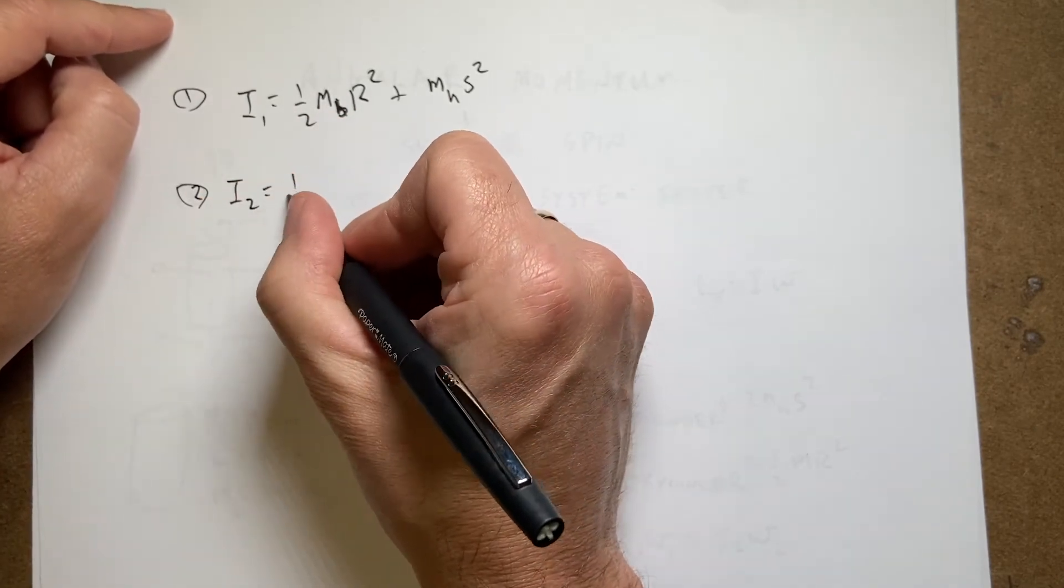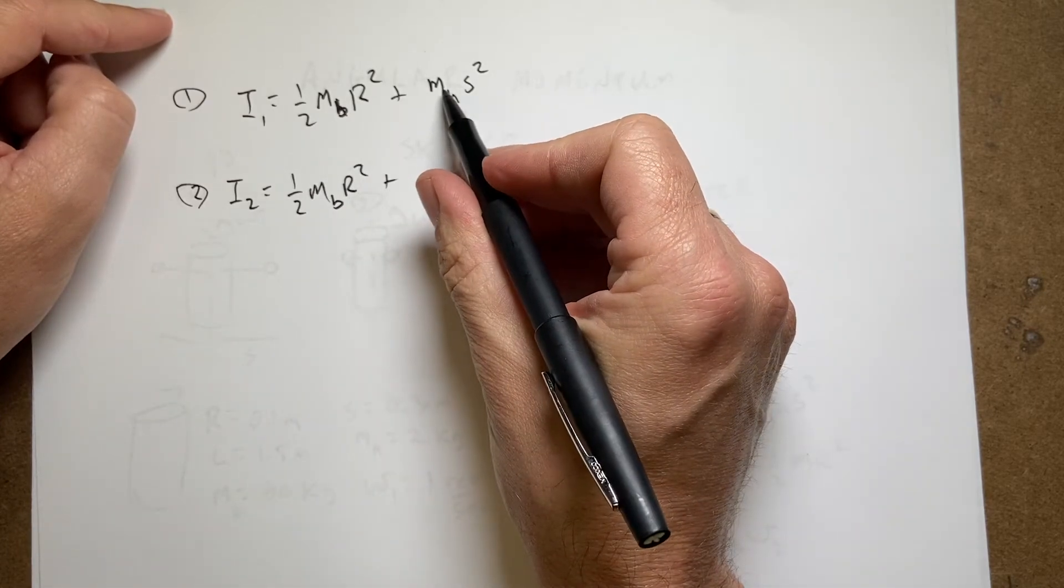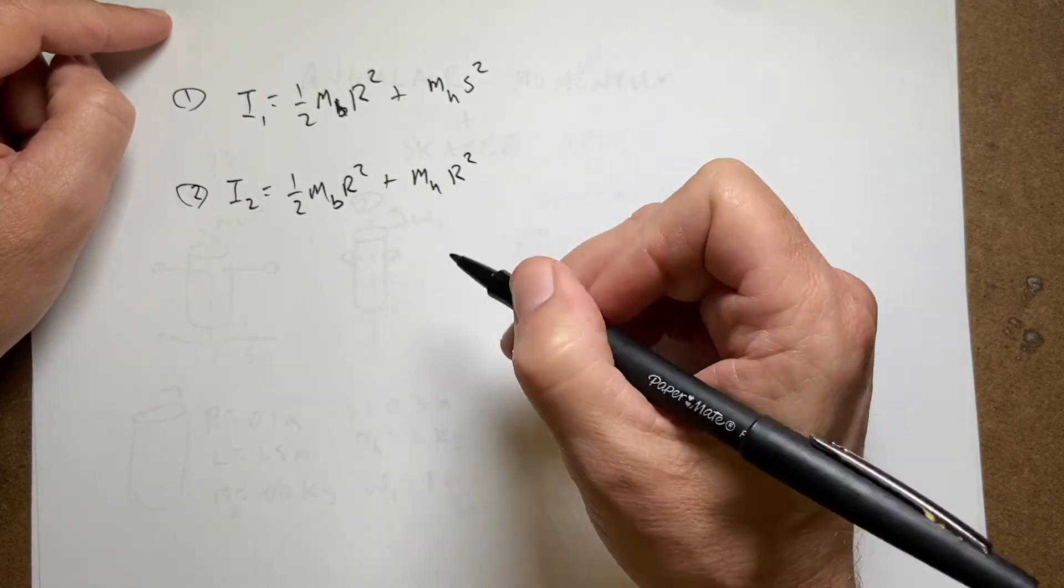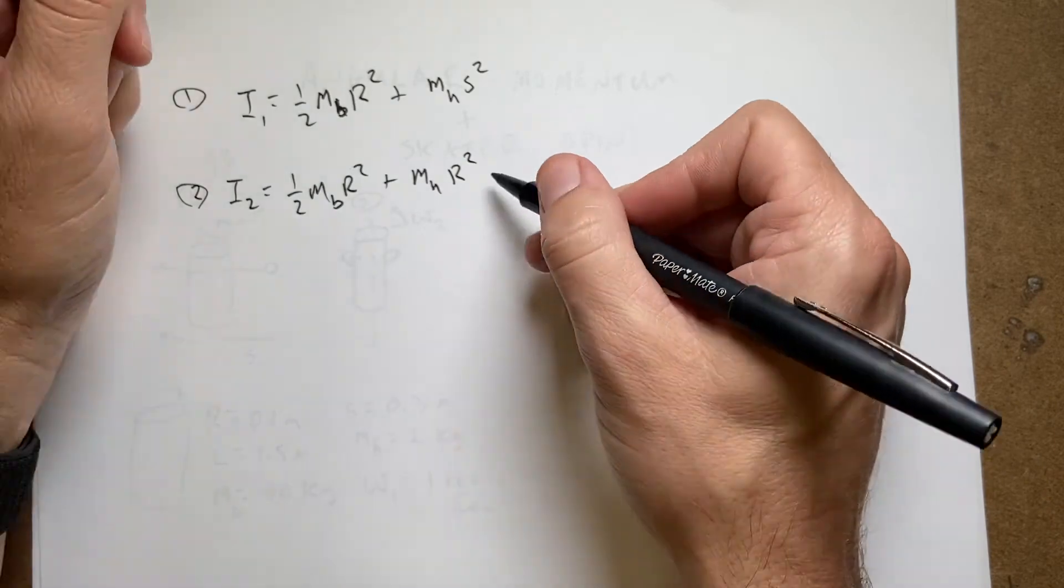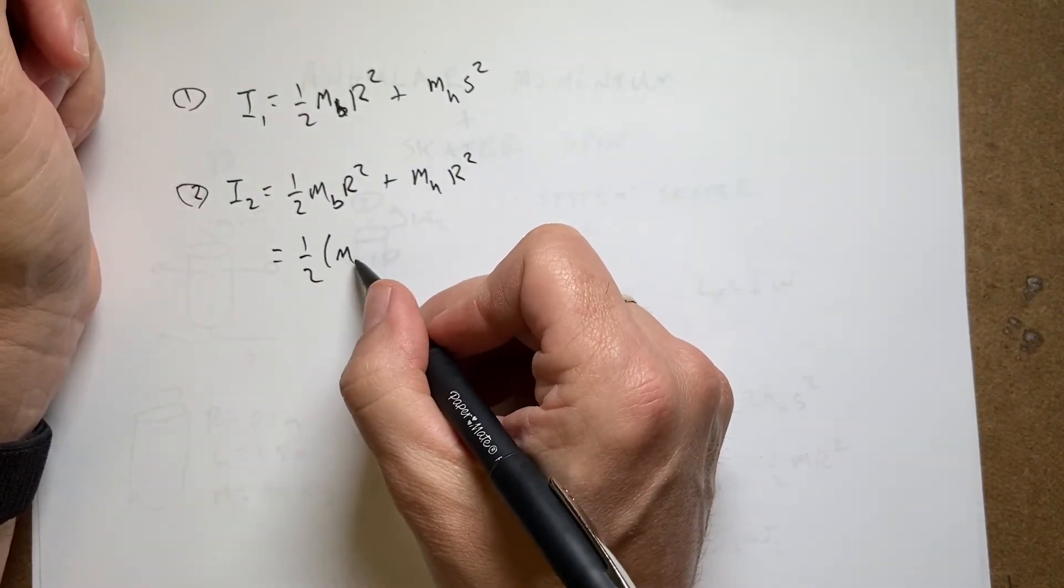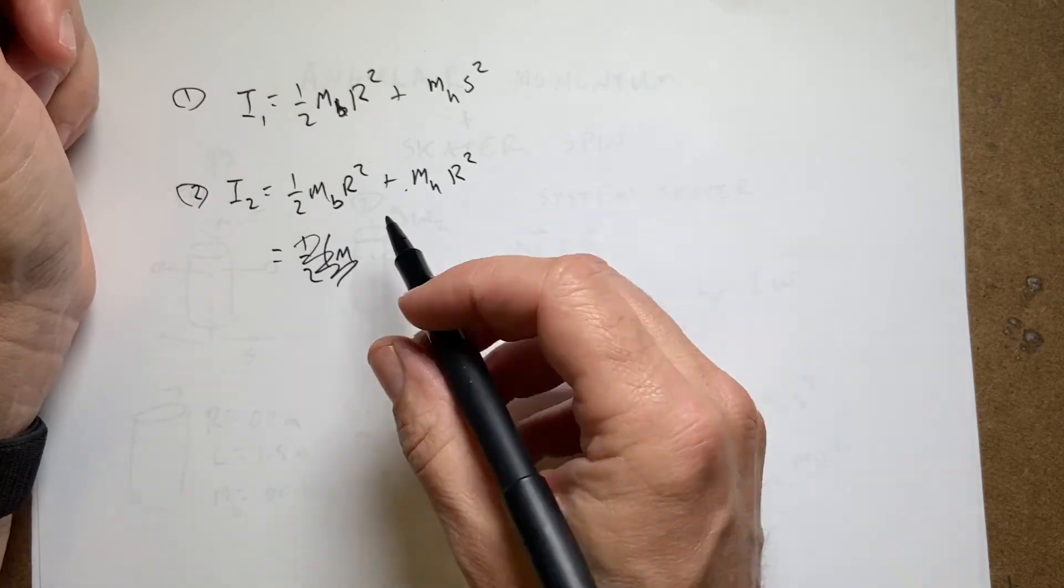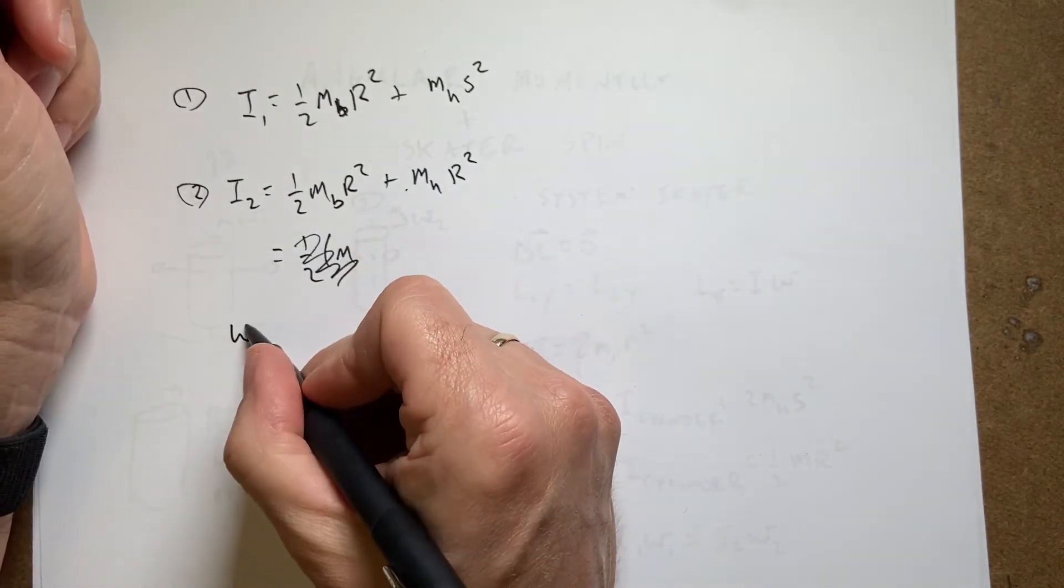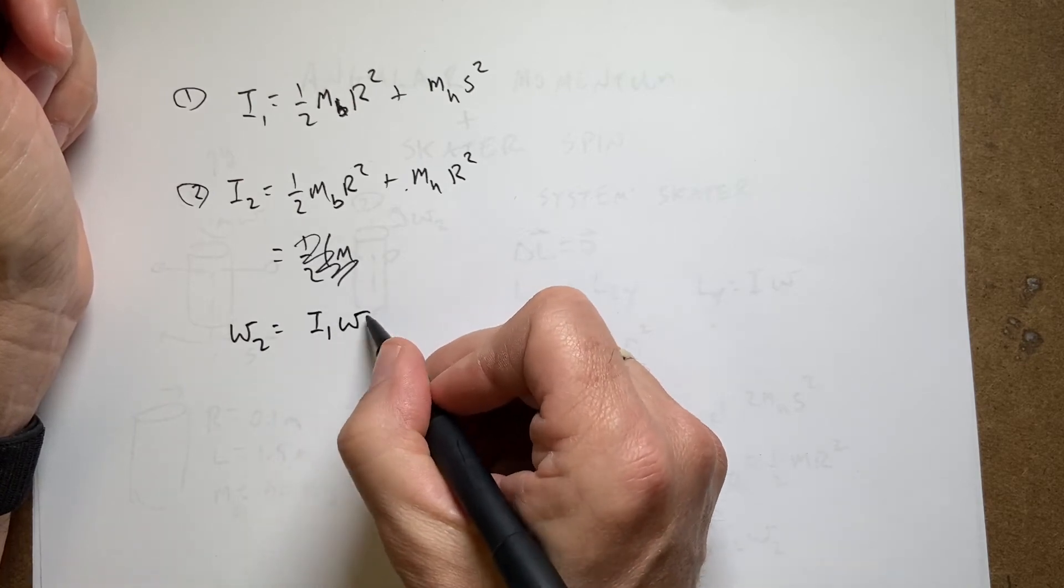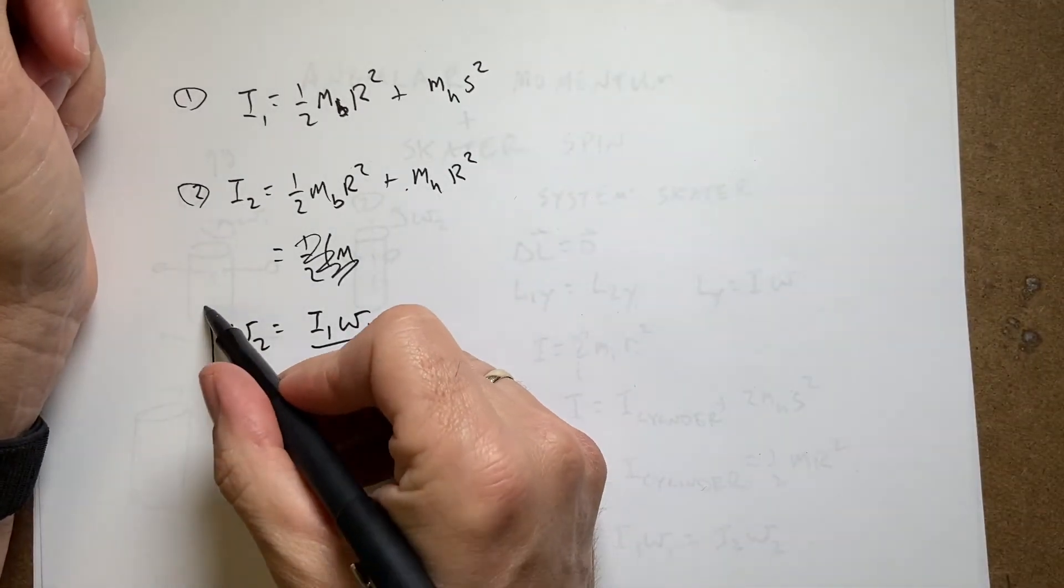I2 is again ½·m_body·r² plus now these two things have a new distance of r, so it's going to be mh·r². I could really write this as... let's just leave it like that because I'm going to put these numbers in anyway. So now I can solve for ω2. It's going to be I1·ω1 over I2 and I'm going to get numbers for these. I'm going to do that in python. Okay but that's my answer.